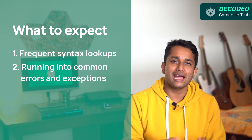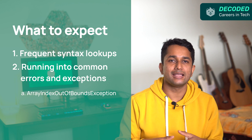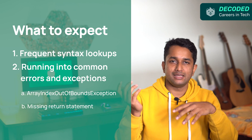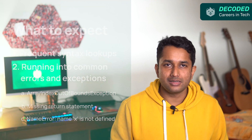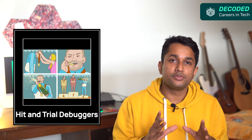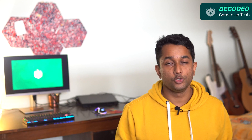For every piece of code you write, you're likely to run into errors like array index out of bound exception, missing return statement, or a variable name not being defined. The best way to cross this stage is to spend time on Google to understand what the error exactly means, then make changes to the code. The biggest mistake you can make is making random changes just to get rid of errors. Any language has a finite number of errors, and once you're familiar with the top 25, your coding speed will increase as well.